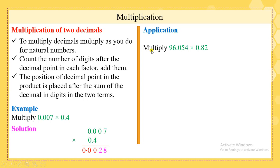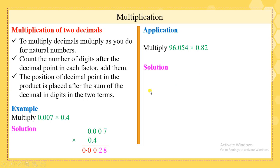Application: Multiply 96.054 times 0.82. Please pause the video and solve the application. Our solution is — first we arrange the numbers above each other.